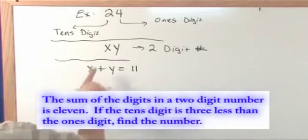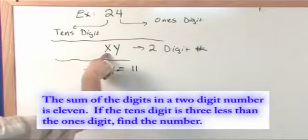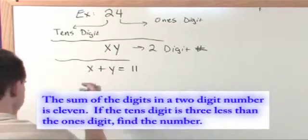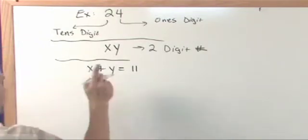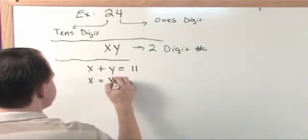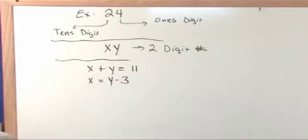If the tens digit, which is this one, is three less than the ones digit, that's the next part. So the tens digit, which is x, is three less than the ones digit. So that's the other part of the equation here. So now I have two equations and two unknowns and I can solve them.